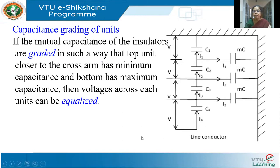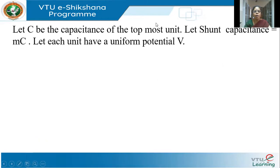The voltage is equalized across all units, so these are called equalizing capacitors. We want the voltage across C1 to be V, across C2 to be V, across C3 to be V — all of them equal to V. We will use the same method followed earlier, that is by writing KCL at different nodes. Let C be the capacitance of the topmost unit C1, let the shunt capacitance be MC, and let each unit have a uniform potential V.